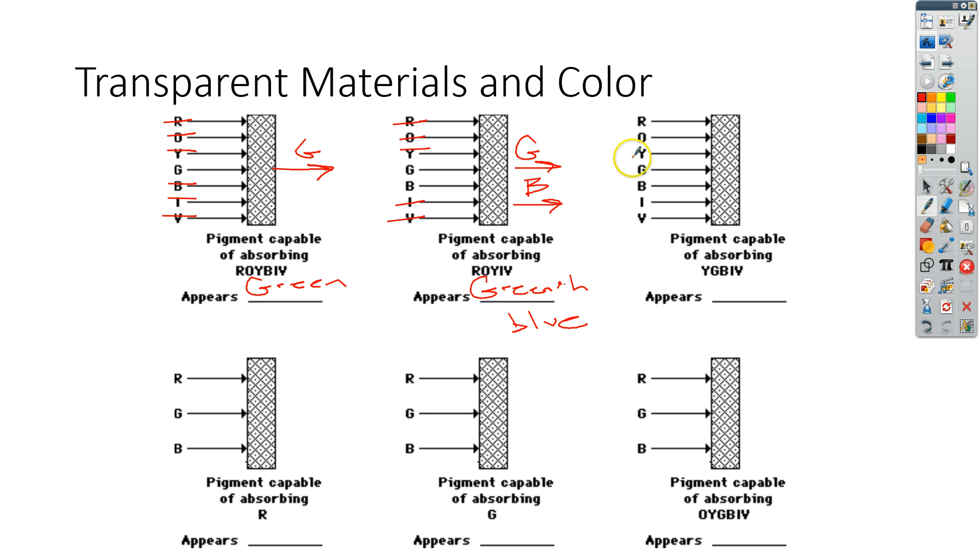The pigment here that's absorbed is yellow, green, blue, indigo, and violet. So you're left with both red and orange. So this one is reddish orange.